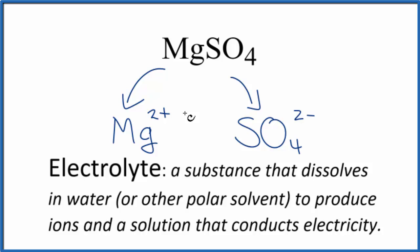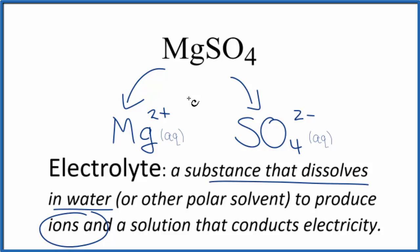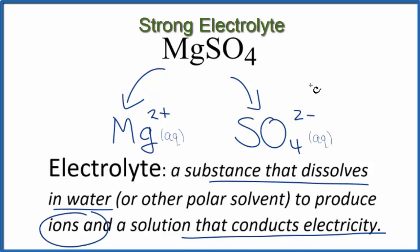Good one to remember. So we have these ions dissolved in water — let's put a little AQ to show they're aqueous. Since it's soluble, they'll be dissolved in water. Looking back at our definition: an electrolyte is a substance that dissolves in water and produces ions. We have ions here, so this solution will conduct electricity. MgSO4, magnesium sulfate, is a strong electrolyte because it breaks apart into its ions and conducts electricity very well. This is Dr. B, and thanks for watching.